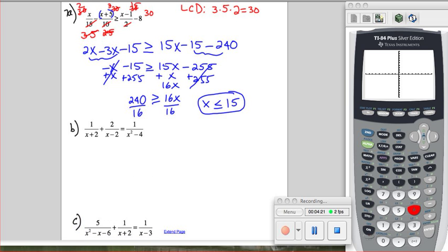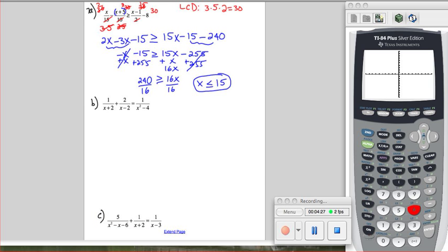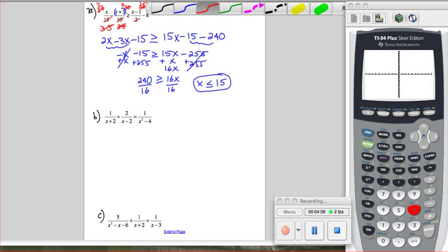b is very similar to a. So we're going to factor the denominators. The only one that we need to factor is this one. That's a difference of two squares. It factors into x minus 2 times x plus 2. So we multiply every term by that LCD, which is x minus 2 times x plus 2.